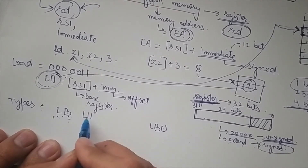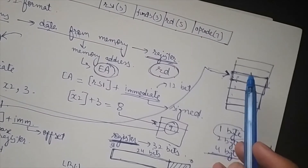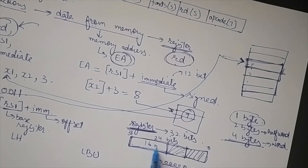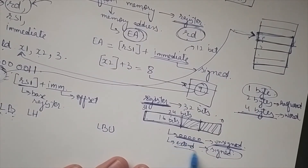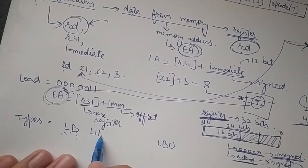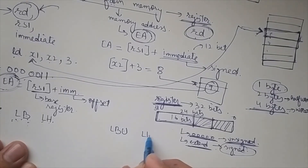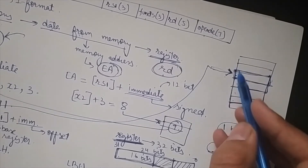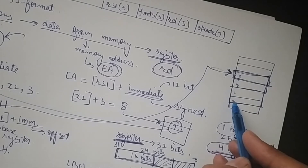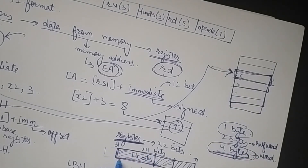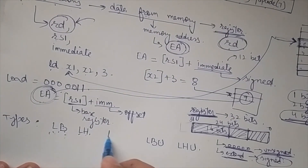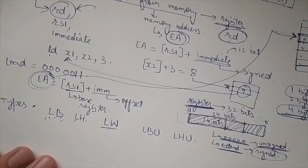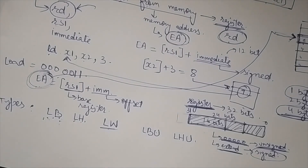Load half word loads two bytes, which is 16 bits, leaving 16 bits vacant. Again we can fill those with zeros or sign-extend, giving us two versions: load half word and load half word unsigned. For load word, we load four bytes, which is 32 bits — filling the entire register. There are no vacant bits, so there is only one version of load word with no unsigned variant needed.